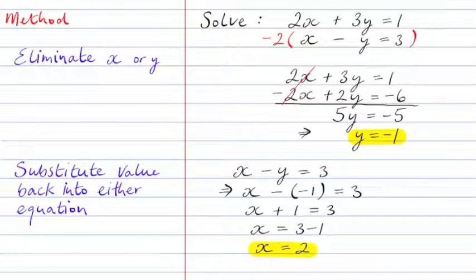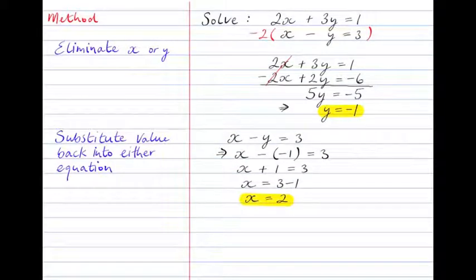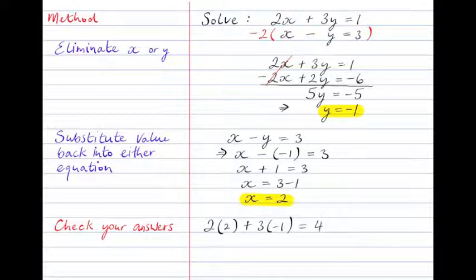And this is the solution. Now, we want to check that this works. So we substitute the x value, 2, and the y value, minus 1, into both of the original equations. The value of 2x plus 3y is 2 times 2 plus 3 times minus 1, which is 4 minus 3, which equals 1. So this does work.